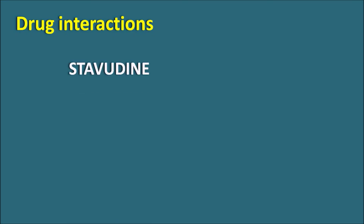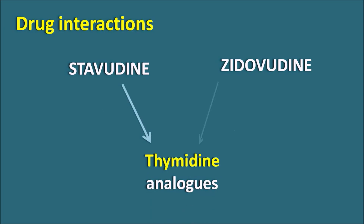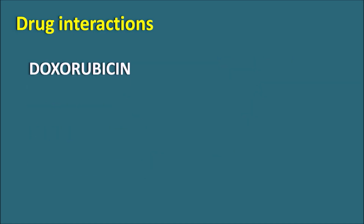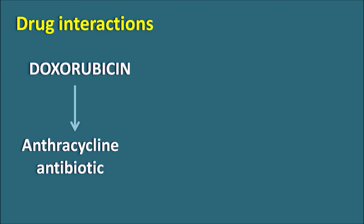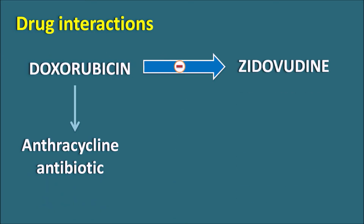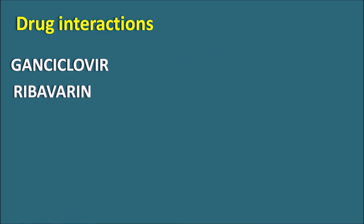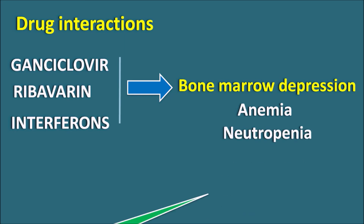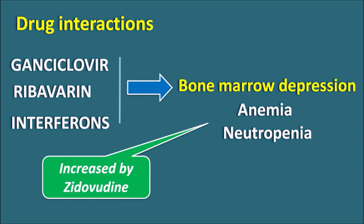Regarding drug interactions: Stavudine is structurally similar to Zidovudine — both are thymidine analogs and NRTIs. When given simultaneously, they compete for phosphorylating enzymes, producing antagonism on each other and cross-resistance; therefore they should not be combined. Doxorubicin, an anthracycline antibiotic used to treat cancer, also produces an inhibitory antagonistic effect on Zidovudine and should be avoided. Other drugs like ganciclovir, ribavirin, and interferons can all produce bone marrow depression, worsening anemia and neutropenia, so Zidovudine should be used carefully with these agents.